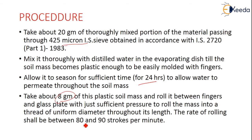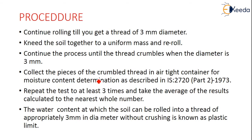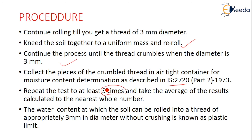The rate of rolling shall be between 80 and 90 strokes per minute. Continue rolling until the thread crumbles at a diameter of around 3 mm. Then collect the pieces of the crumbled thread in an airtight container for moisture content determination as described in IS 2720 Part 2 1973. Repeat this test at least three times, and the water content at which the soil can be rolled into a thread of approximately 3 mm diameter without crushing is known as the plastic limit.